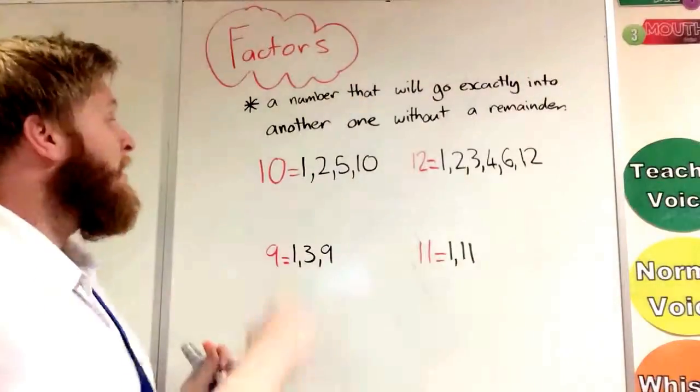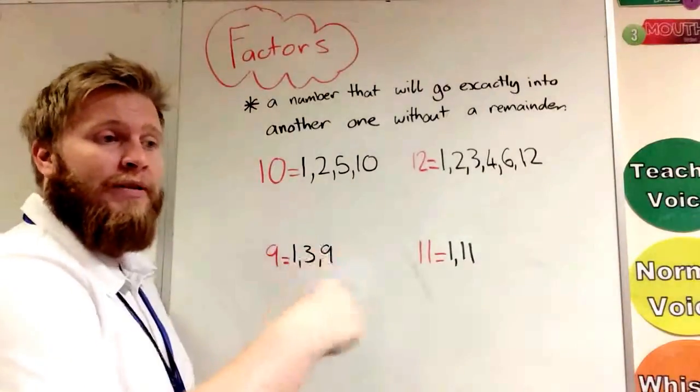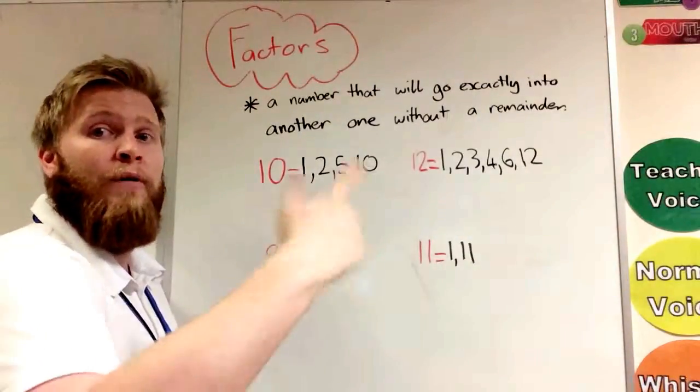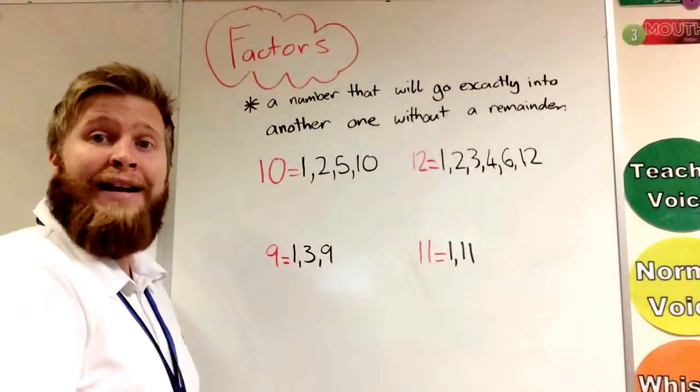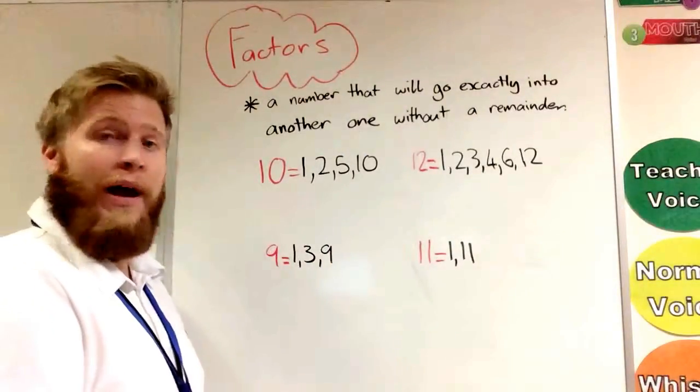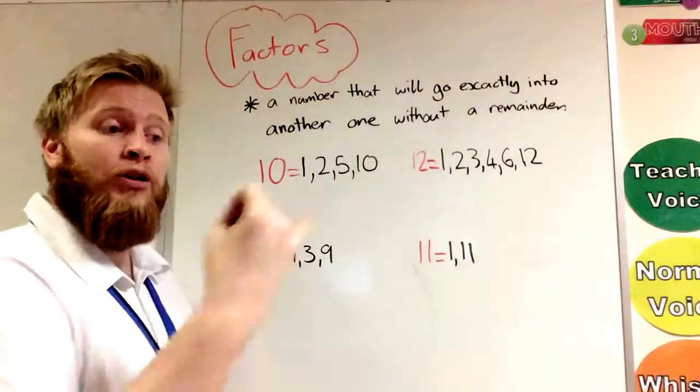Now we know if we count on in the 1 times table—1, 2, 3, 4, 5, 6, 7, 8, 9, 10—we would get to 10 with no left over.